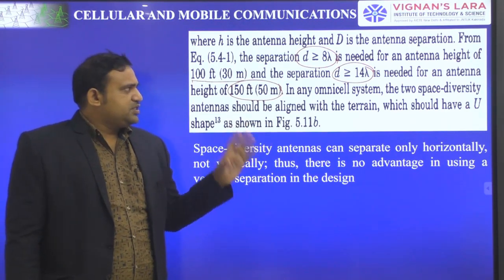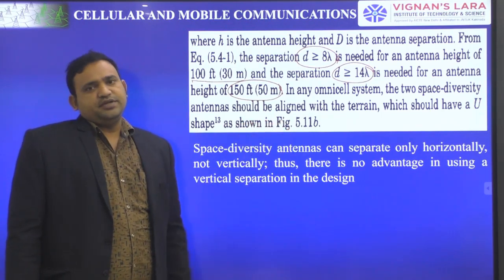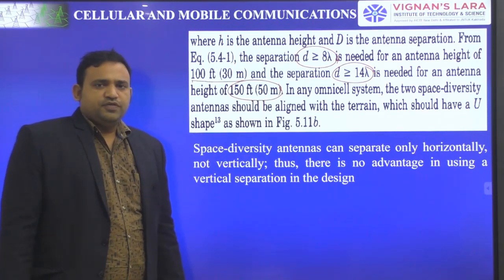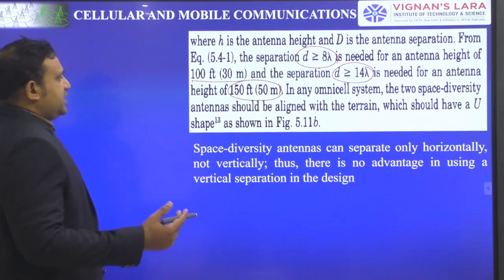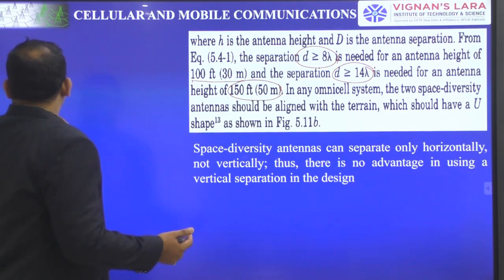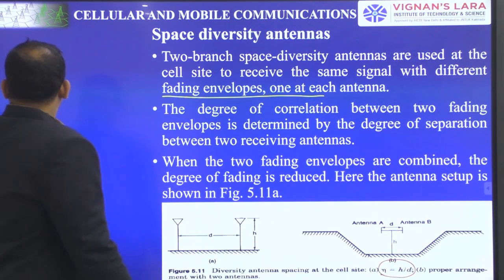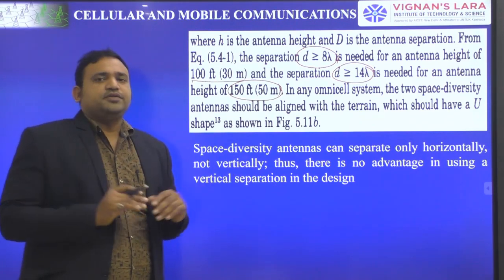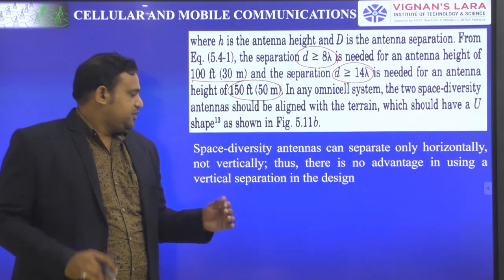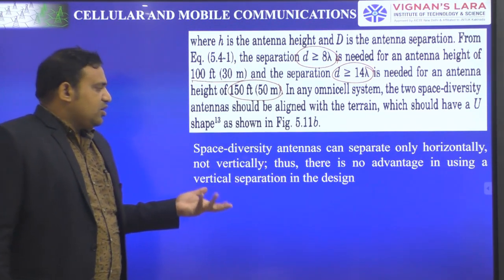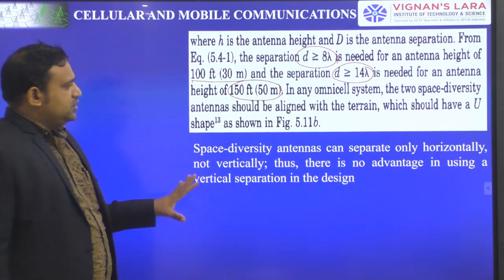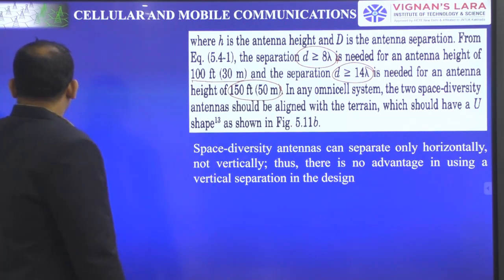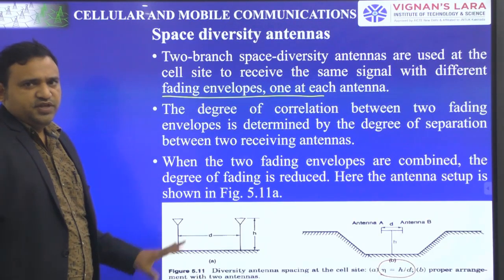In any omni-cell, the two space diversity antennas should be aligned with the terrain contour. We should have a U-shape arrangement as shown in figure B. These space diversity antennas can be separated only horizontally, not vertically. Thus, there is no advantage in using a vertical separation in the design. These are the key points about space diversity antennas — a very simple topic.